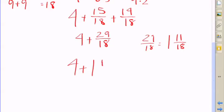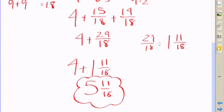So what I need to understand is that 29 eighteenths also equals one and 11 eighteenths, because 18 goes into 29 one time with 11 left over. So add the four and the one, and then you have your 11 eighteenths left over, and the total answer is five and 11 eighteenths.